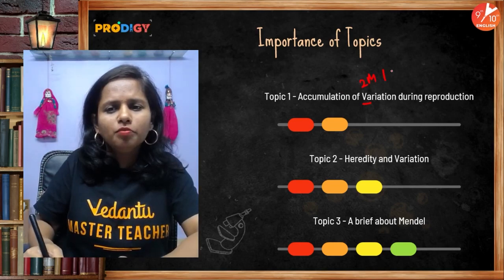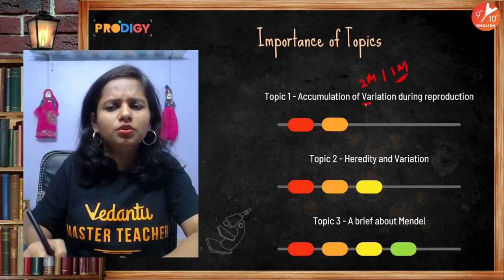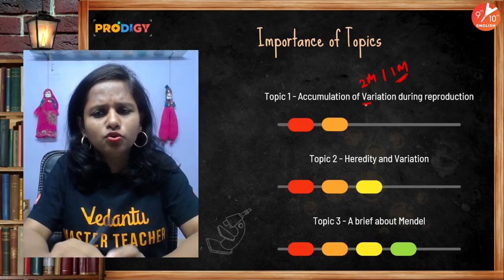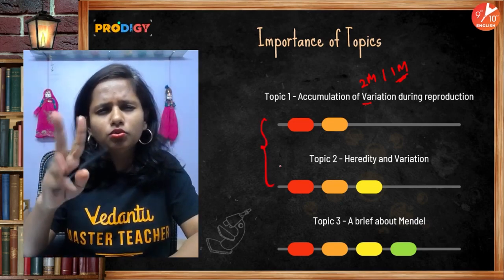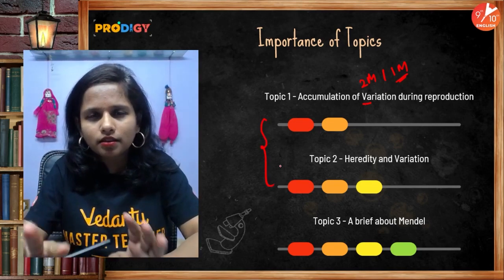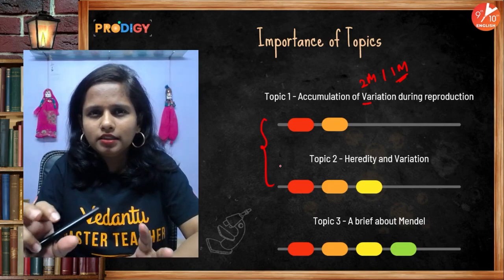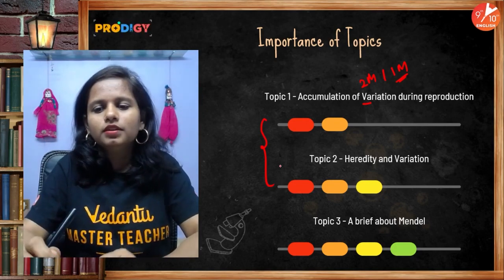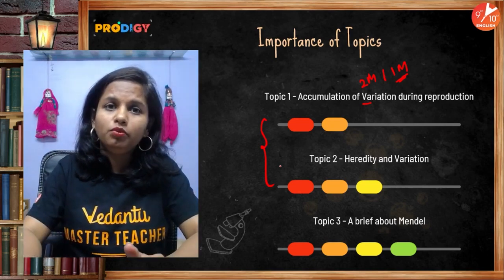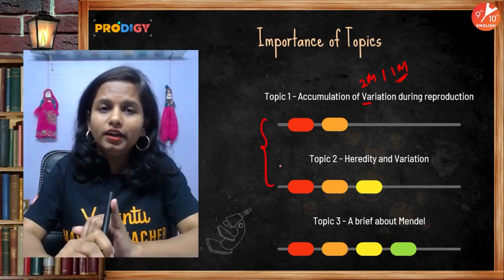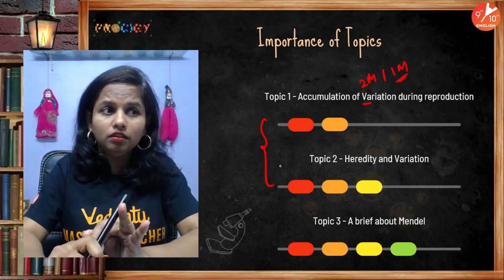Regarding academic importance, you may expect a two-mark question on the significance of variation, or a one-mark definition of heredity. Collectively, two to three marks — I'd rate it as an average topic on a scale of five. Now the brief history about Mendel is very important.